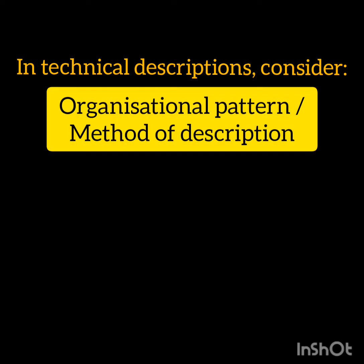The first and most common way of writing a description is using the spatial method. That is the order in which the parts are seen — if they are considered from top to bottom, or from bottom to top, or outside to inside, or any other arrangement which is logical to the device or mechanism we are looking at.